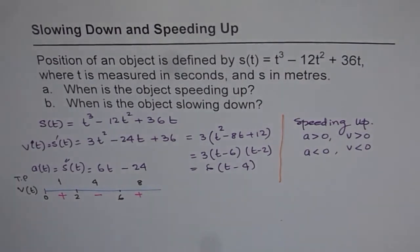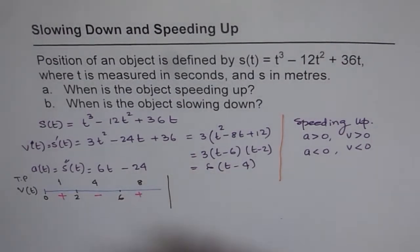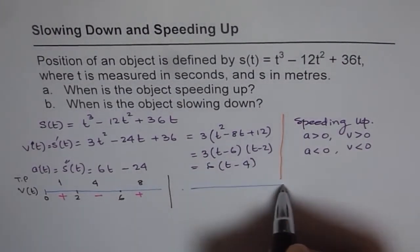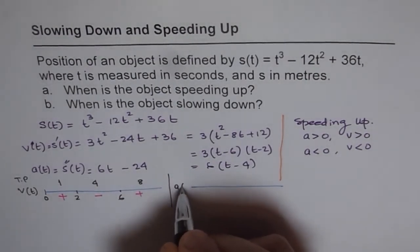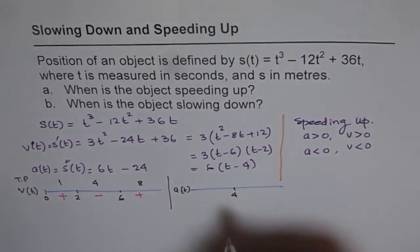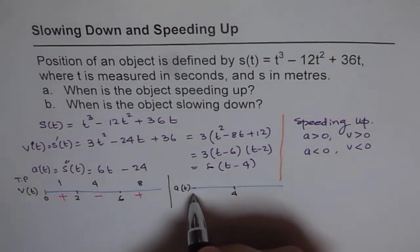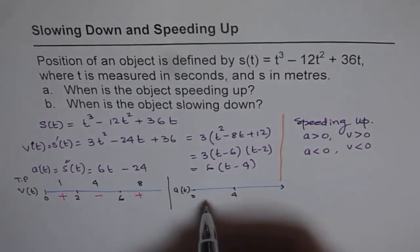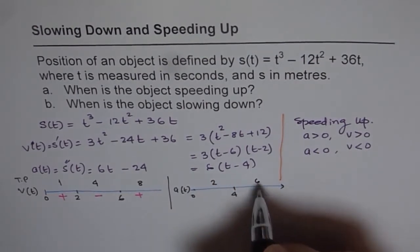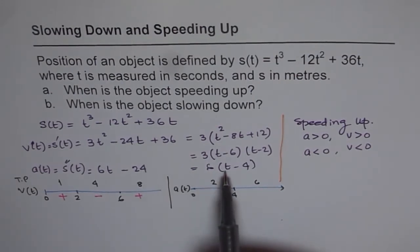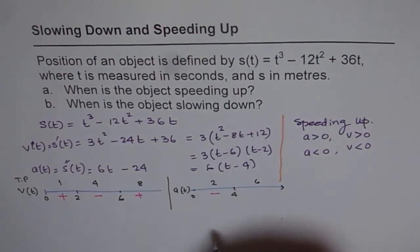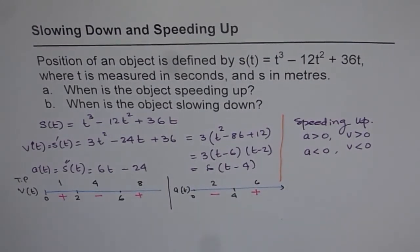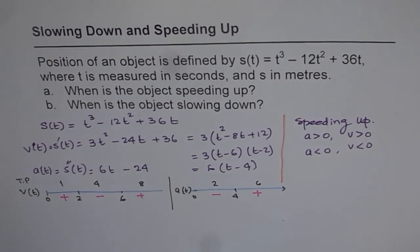Now let's study the behavior of acceleration. Acceleration has a zero at t = 4, so it is either positive or negative on each side of 4. Taking test point t = 2 before 4: (2 - 4) is negative, so acceleration is negative before 4. Taking test point t = 6 after 4: (6 - 4) is positive, so acceleration is positive after 4.